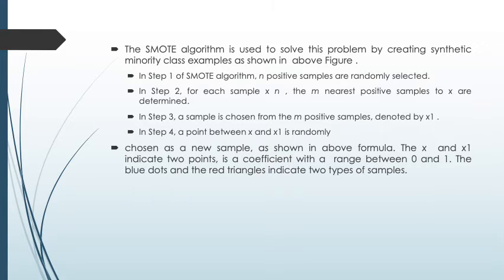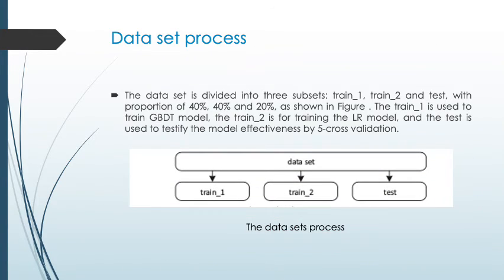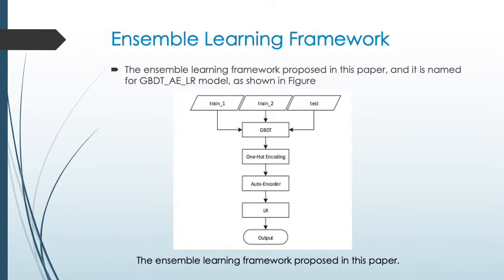The dataset is divided into three subsets: Train One, Train Two, and Test, with proportions of 40%, 40%, and 20% respectively. Train One is used to train the GBT model, Train Two for training the LR model, and the test set is used to testify model effectiveness by 5-fold cross validation. This slide shows the ensemble learning framework — the GBT-AE-LR model. The next slide will discuss GBT, one-hot encoding, autoencoder, and logistic regression.